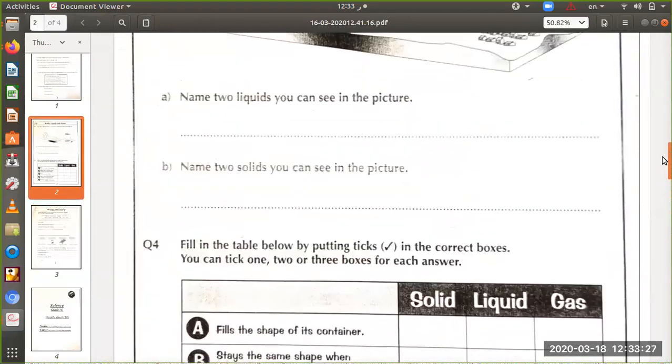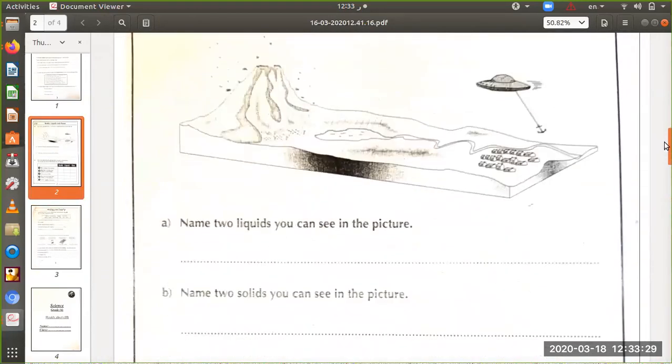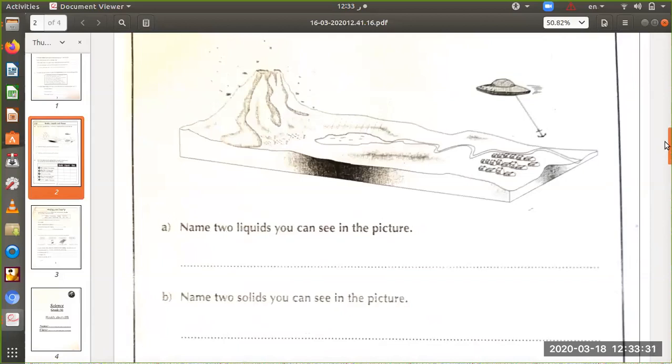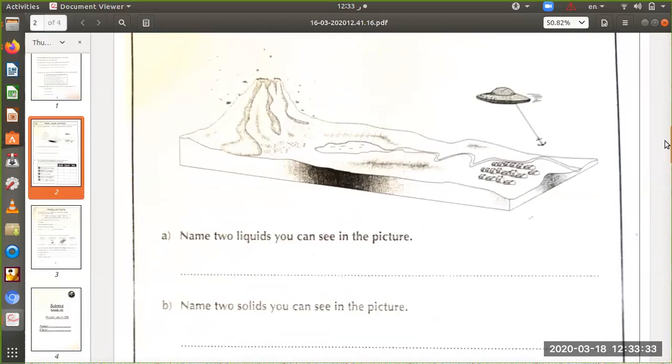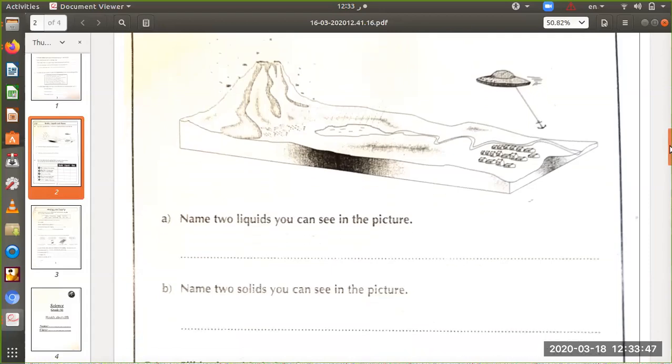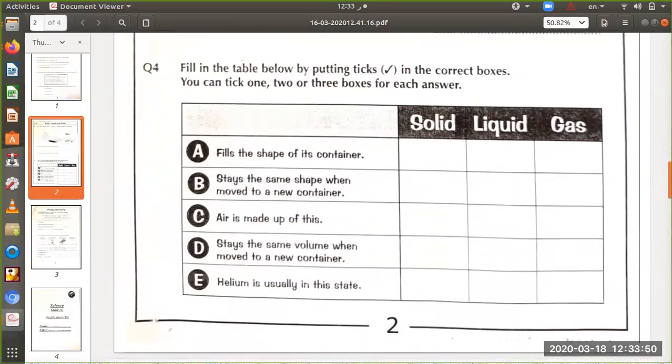Name two liquids you can see in the picture. You can write lava, rain, lake, something like that. Name two solids you can see in the picture: mountain, spaceship, buildings, any of them.